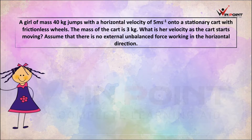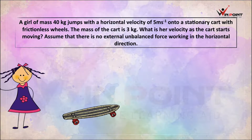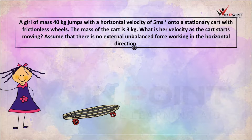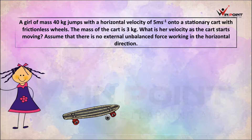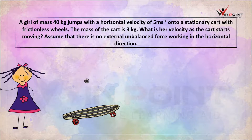There is a girl and there is a cart. The girl has a mass of 40 kg and the mass of the cart is 3 kg. The velocity of the girl is 5 m/s when she is jumping, and the cart is at rest — its velocity is 0 before the interaction, meaning before she jumps onto the cart.